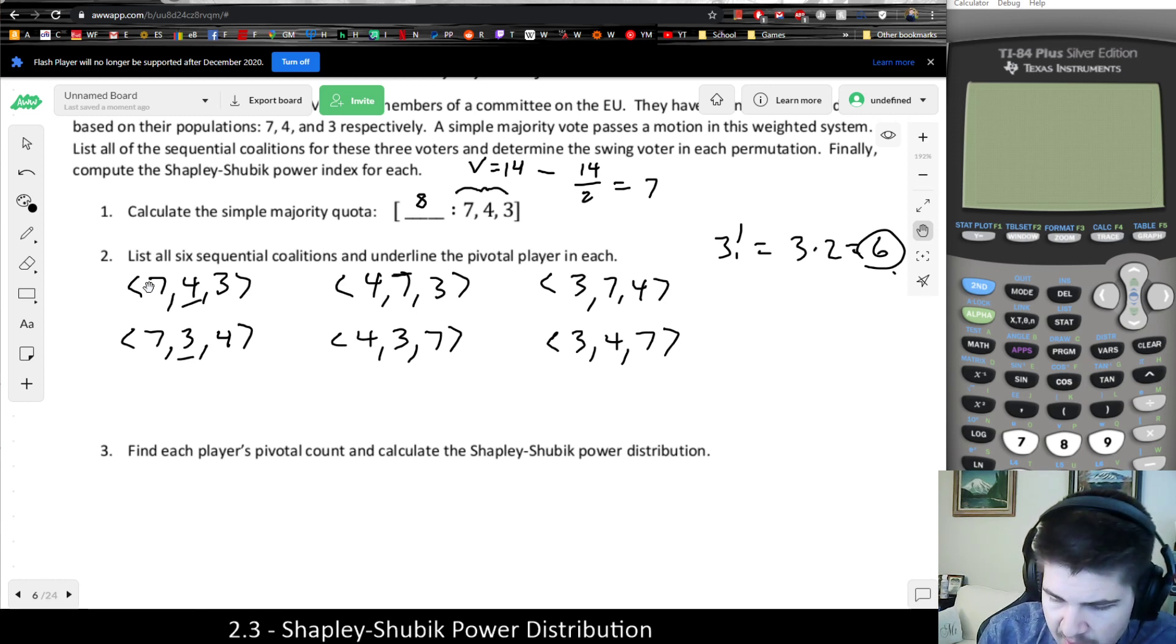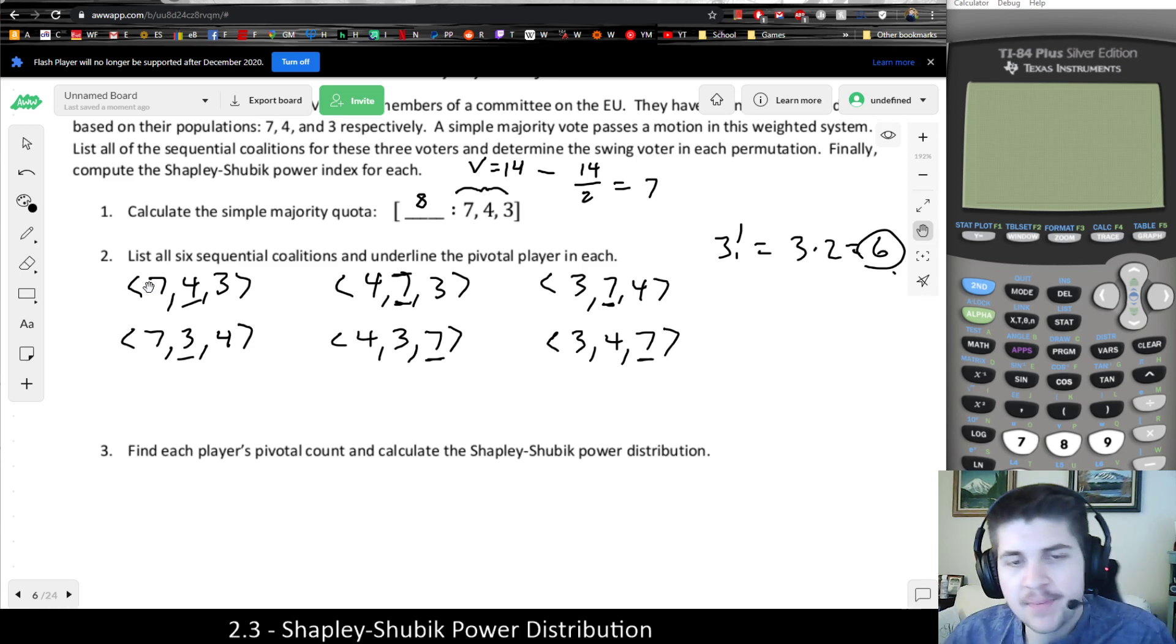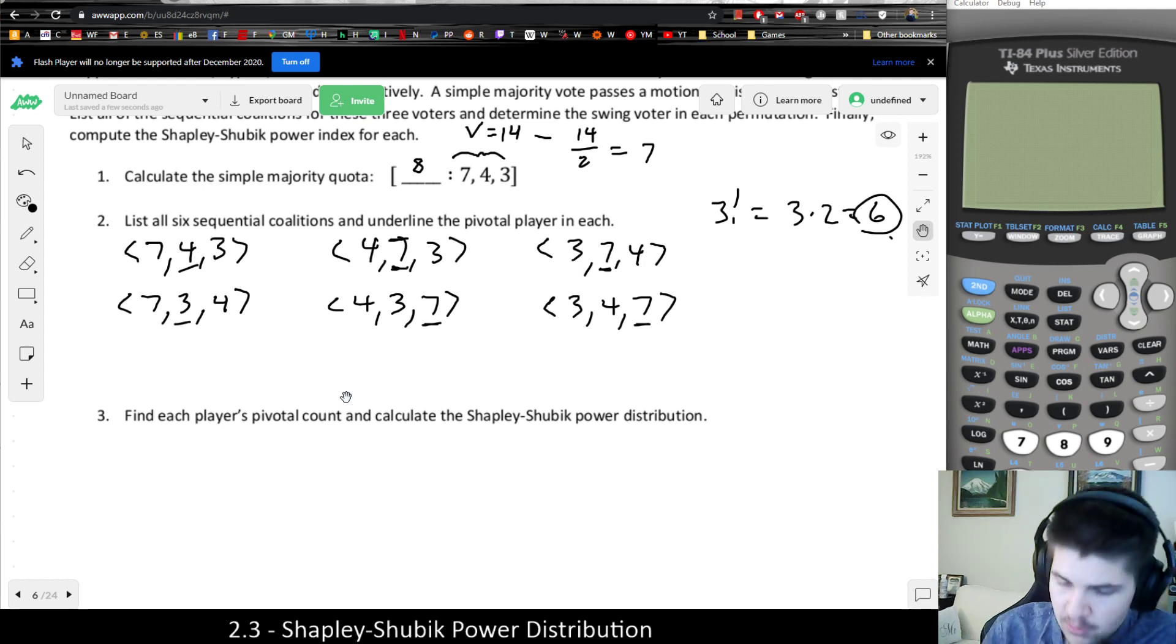4 plus 7 does not make 8, so we need the 3. 4 plus 3, same. 3 plus 7, wait, what am I saying? 4 plus 7 does make 8, but 4 plus 3 does not. I was getting ahead of myself there. 3 plus 7, I need more sleep. 3 plus 7 makes 8, and 3 plus 4 does not. But basically, find the pivotal player in each case, then count them up and find the total.